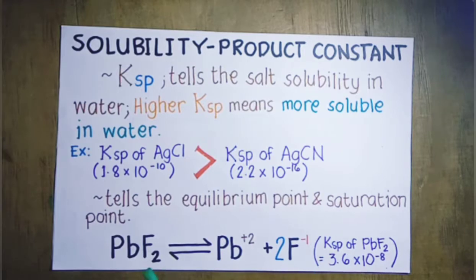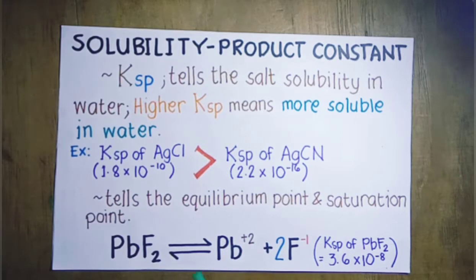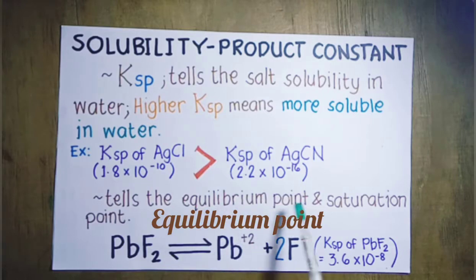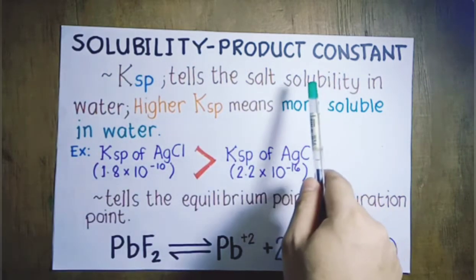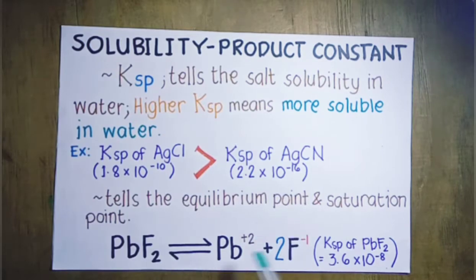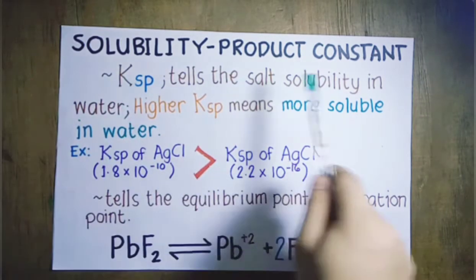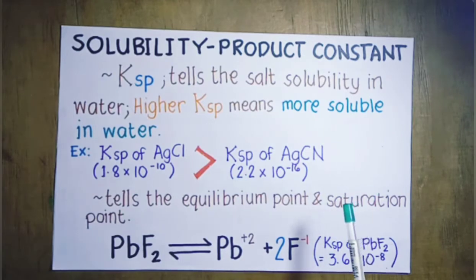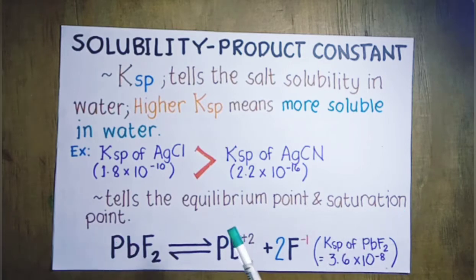This dissociation is a reversible dissociation. There will be a point where the rate of formation of lead ion and fluoride ion will be as fast as the rate of formation of lead(II) fluoride — that point is known as the equilibrium point. The solubility product constant also tells us the equilibrium point in a dissociation, as well as the saturation point of any ionic compound. The saturation point is the limit to which a salt or ionic compound can be dissolved in water.